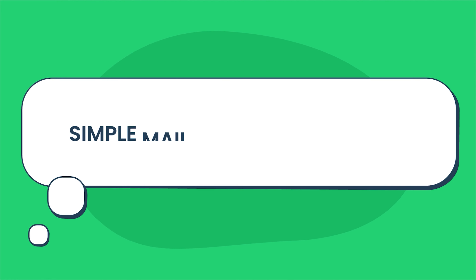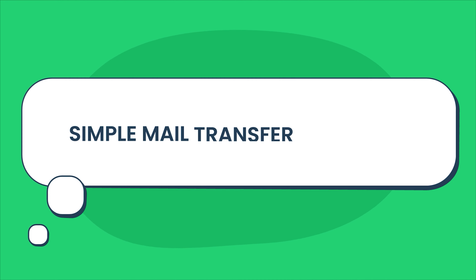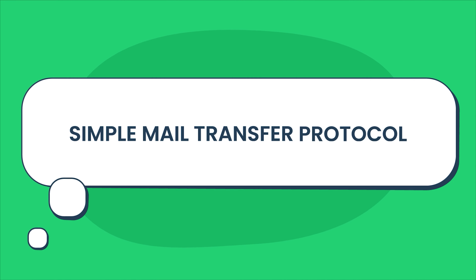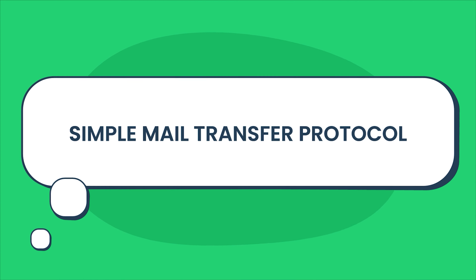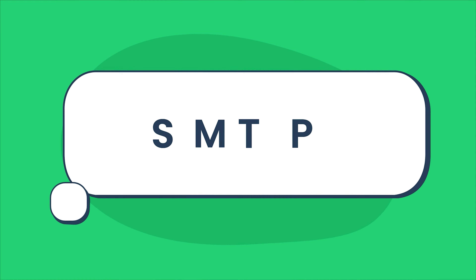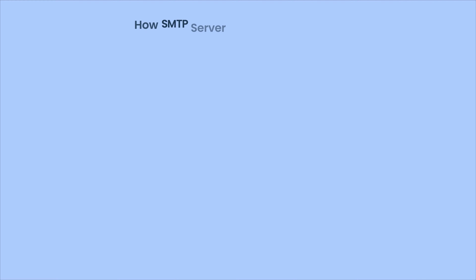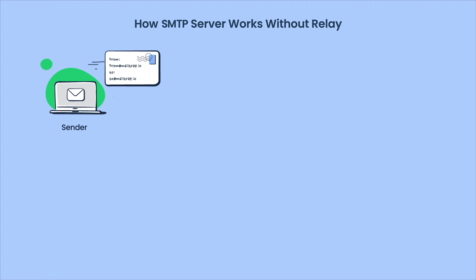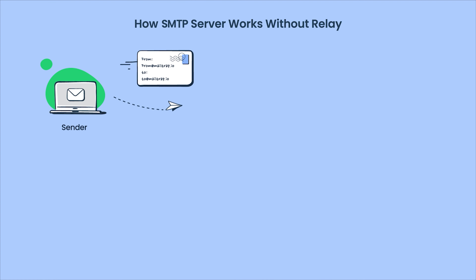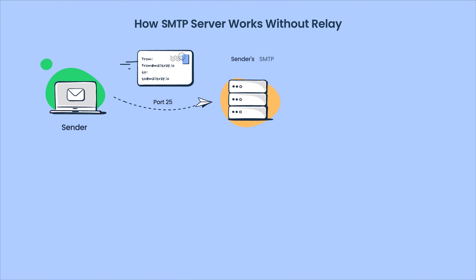Simple Mail Transfer Protocol is an application layer protocol defining communication rules between servers and computer networks. Email communication involves many components, including the user, SMTP client, server, and mail agents.